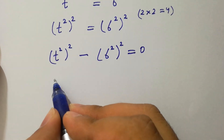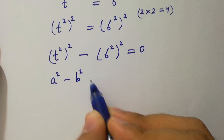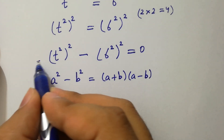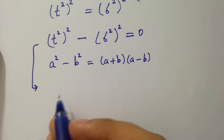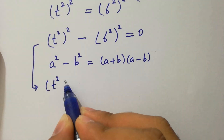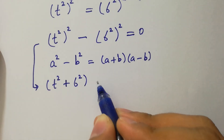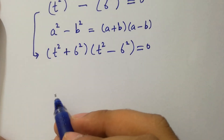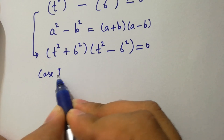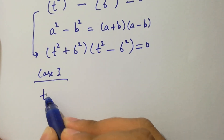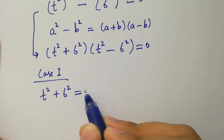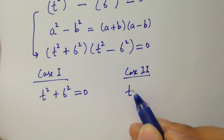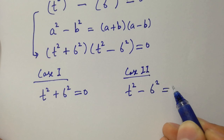We know the formula a² minus b² equals (a plus b)(a minus b). Applying this, it becomes (t² plus 6²)(t² minus 6²) equals 0. So we have two cases: Case 1 is t² plus 6² equals 0, and Case 2 is t² minus 6² equals 0.